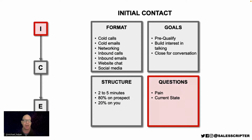In the initial contact, our goal is not to sell the product — it's to sell the conversation. As part of trying to sell the conversation, you want to determine not only if it makes sense for the prospect to agree to a conversation, but also whether it makes sense for you to spend your valuable time in that conversation. This is where you pre-qualify using pain questions and current state questions.